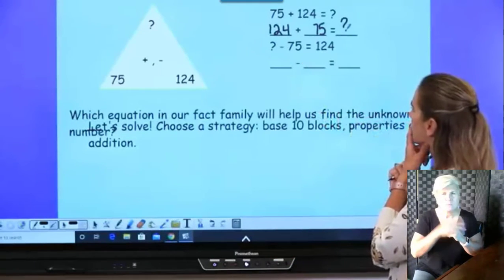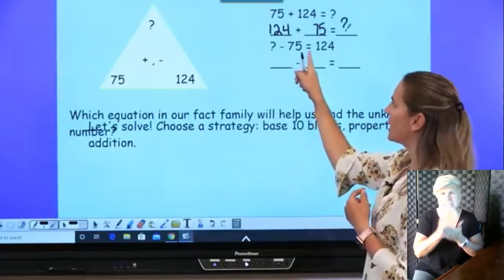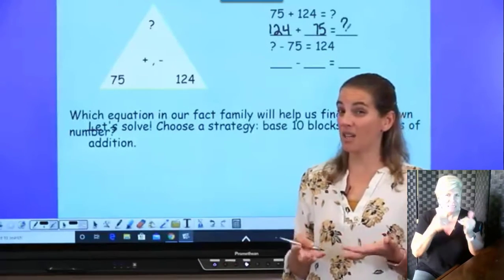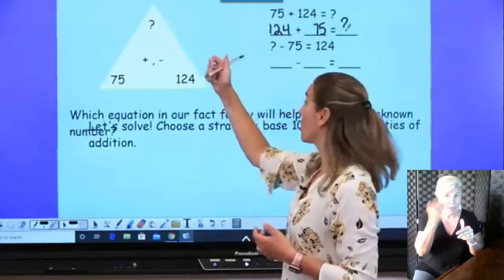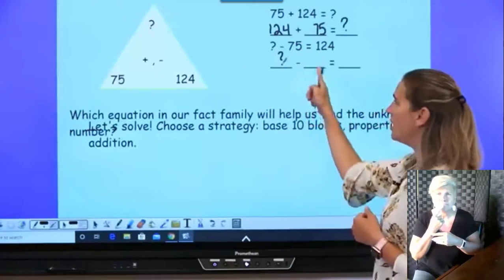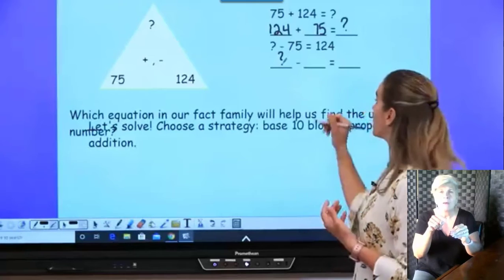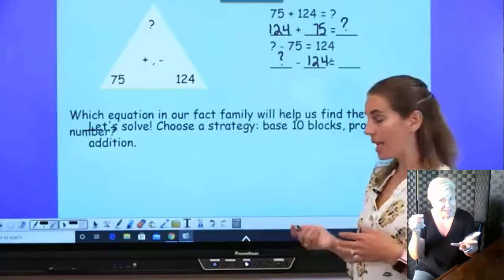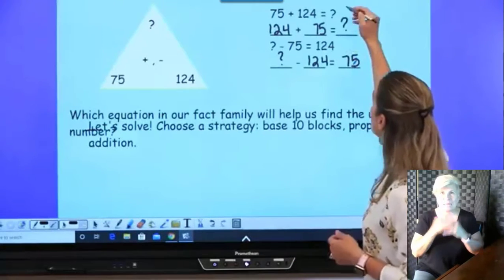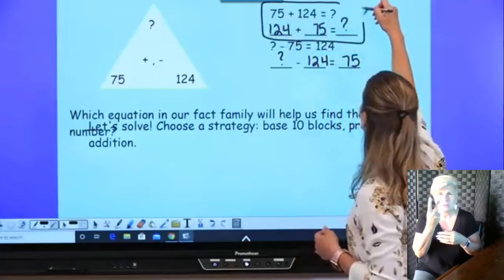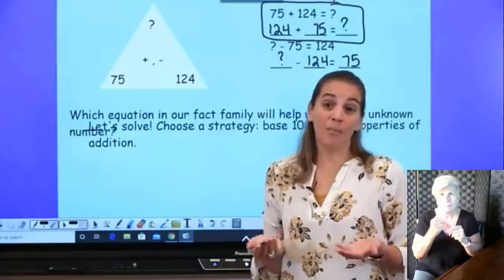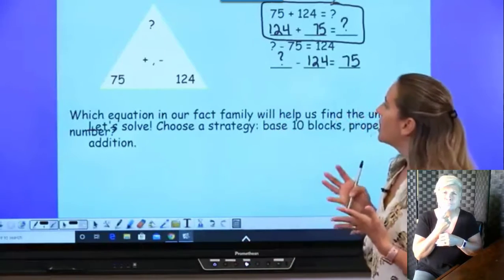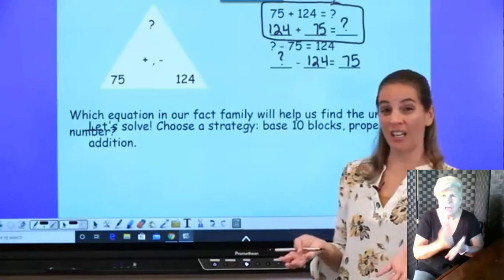Now let's look at the subtraction problems. Some number minus 75 equals 124 — in my subtraction problem I still have to keep my biggest number first, which is that unknown number, so I start with the question mark. Then I'll have question mark minus 124 equals 75. So now I need to choose one of the two addition problems to solve and find that unknown sum.